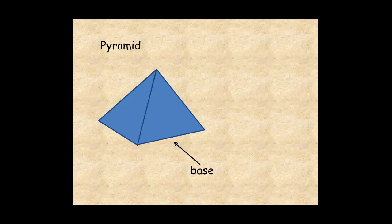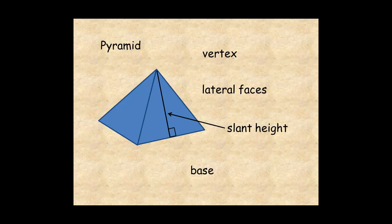The triangular faces are called lateral faces. The lateral faces meet at a point called the vertex. Finally, the slant height of the pyramid is the height of the triangular faces.